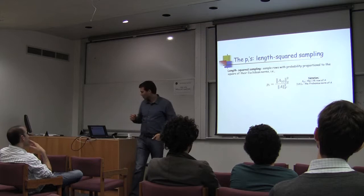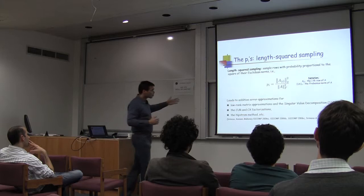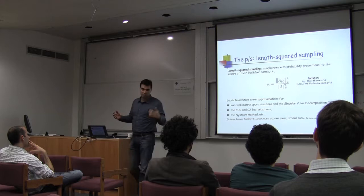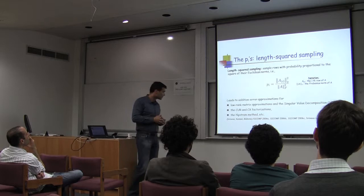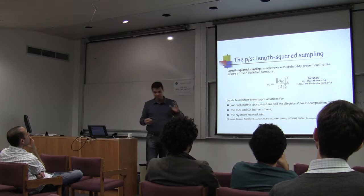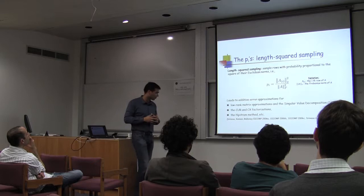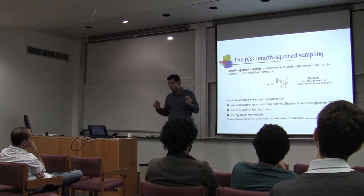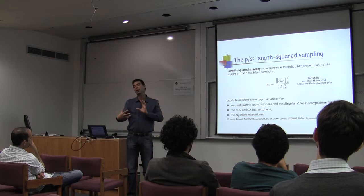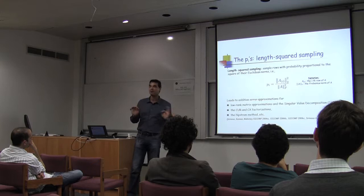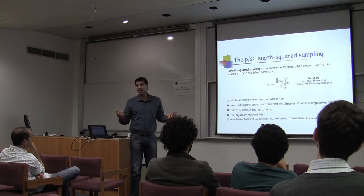For a 0-1 matrix, this distribution biases you towards denser rows — rows containing more non-zero entries — which is probably a good idea. You can prove things with this approach, such as approximations to the singular value decomposition, CUR, CX, and the Nystrom method, which relates to machine learning tasks like clustering and classification. However, this gives what in theoretical computer science you'd call additive error approximations — fairly large-scale error. You get a coarse idea about your matrix, but not sufficient for refined data analysis.